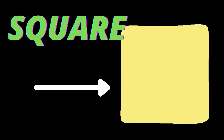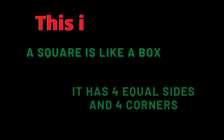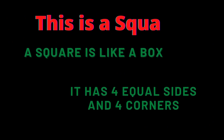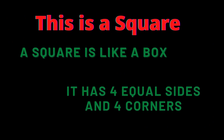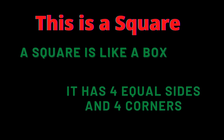S-Q-U-A-R-E, square. A square is like a box. It has four equal sides and four corners.